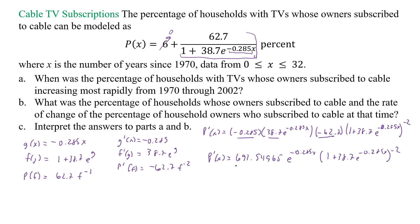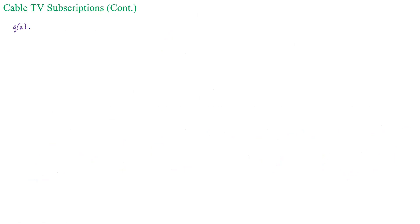Now we've simplified to that, and now we have to take the second derivative. My second derivative is basically going to be the product of two parts, so I can call that g of x and h of x. I'm going to go to the next page to work on that. My g of x was 691.54965 e to the negative 0.285x, and my h of x was 1 plus 38.7 e to the minus 0.285x to the negative 2.